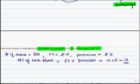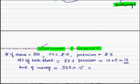Now if Rs 15 is the market value of one share and I want to purchase 500 shares, then what will be the total amount of money? The amount of money will be equal to number of shares, that is 500, multiplied by the market value of Rs 15. So 500 into 15 is Rs 7500. The amount required to buy 500 shares at a premium of Rs 5 with face value Rs 10 is Rs 7500.